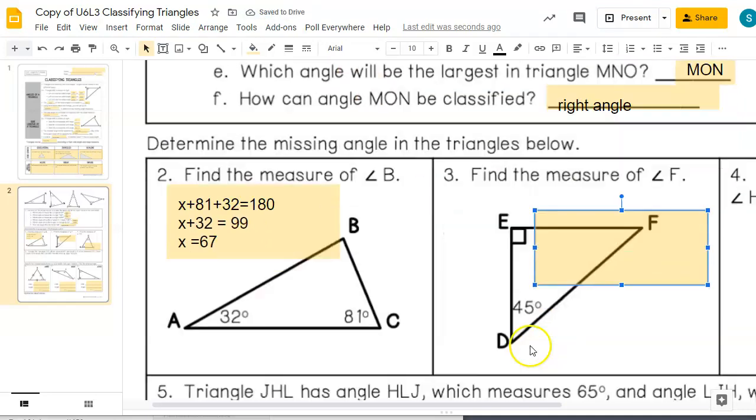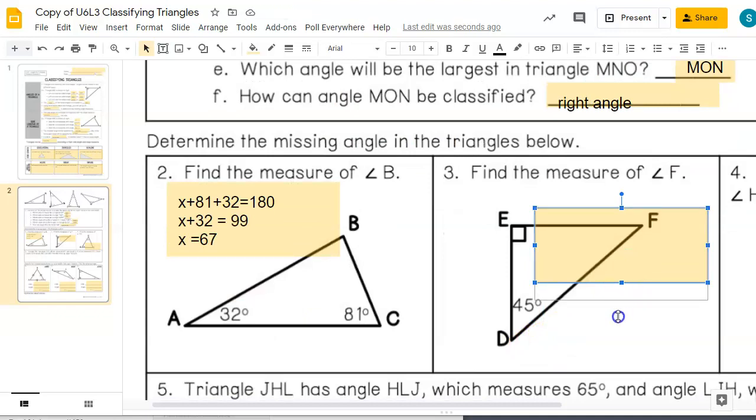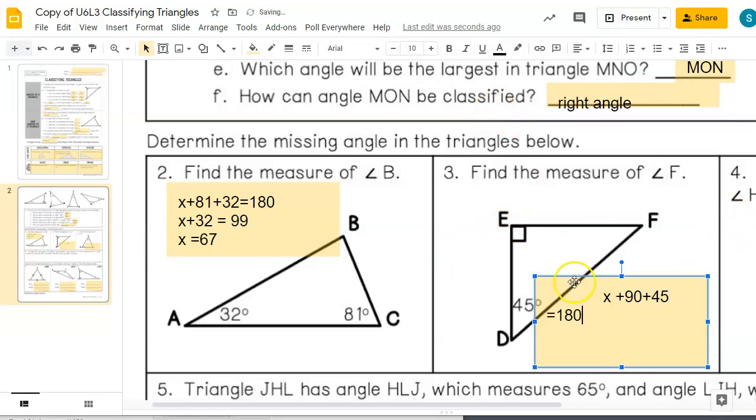Let's look at the next one. Find the measure of angle F here. So again, I'm going to label X there. So X plus 90, because we've got the little square that's 90, plus 45. And that has to equal 180. Let's go ahead and combine these two. So this is 135. So I need to subtract 135 from both sides, and I get X equals 45. So this is a 45-degree angle.